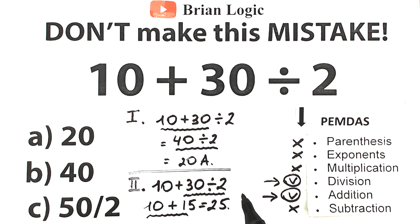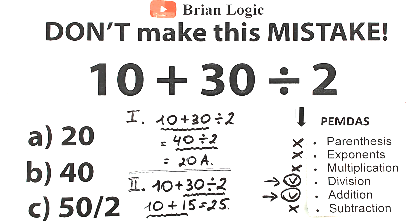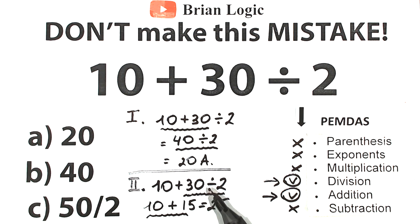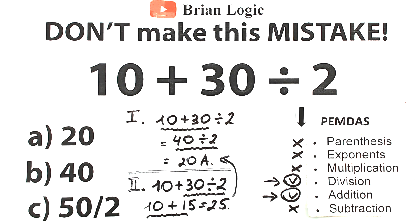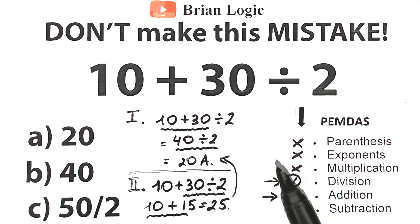This is the biggest mistake in math — when you add first, then divide. Because the multiplication and division group is always before the addition and subtraction group, so division is always before addition. We can't find our answer of 25 among the options at first glance, so a lot of students go back to the wrong answer of 20, which is absolutely incorrect. They choose option A and move on. But in our case, option A is absolutely wrong.